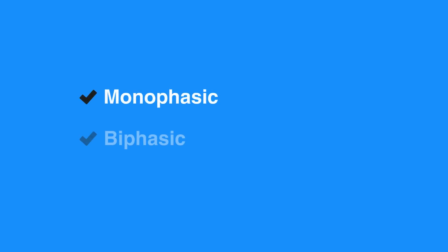The appropriate energy dose is determined by the design of the defibrillator — monophasic or biphasic. If you are using a monophasic defibrillator, give a single 360-joule shock. Use the same energy dose on subsequent shocks.